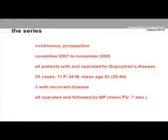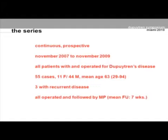My series is a continuous prospective one from November 2007 to November 2009. All patients with unoperated Dupuytren's disease in my practice — there were 55 cases. The ratio between females and males seemed quite unusual. Mean age was 63, from 29 to 94. Three had recurrent disease, and I operated all of them with a mean follow-up of seven weeks, because my main objective was skin healing.